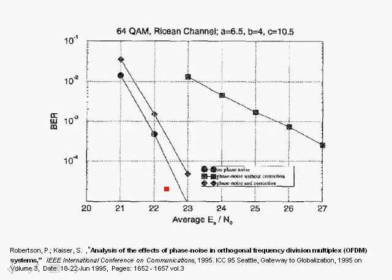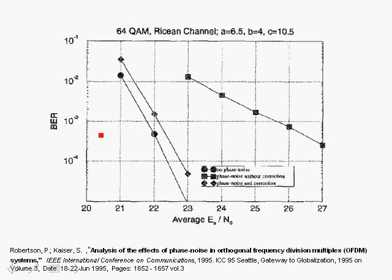Let's take a look at some simulation results. Here we have the bit error rate versus the average Es over N0, which is related to the signal-to-noise ratio. This curve is the case where we have phase noise with no compensation — we don't attempt to correct for the detrimental effects of phase noise. The other curve is the case where there is no phase noise at all. We see that if we don't tackle phase noise, we have a severe degradation in the performance of an OFDM system. At 10 to the minus 3, there is roughly 3.5 dB degradation, and at 10 to the minus 4, about more than 4 dB degradation due to phase noise.